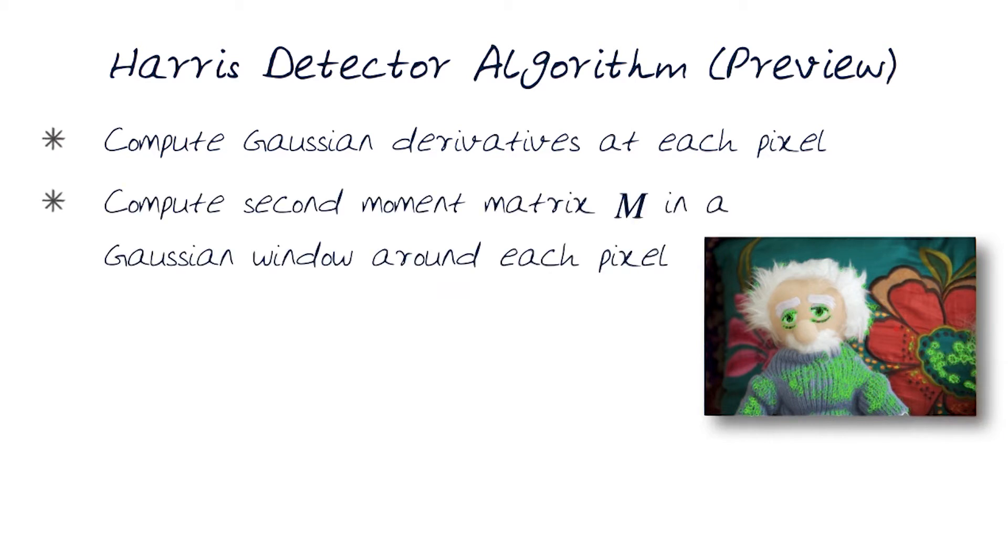Second thing we want to do is compute the second moment matrix M in a Gaussian window around each pixel. Find a pixel and going through this whole image, find a small region and compute the second moment matrix. Because now we have the derivatives, we know how to do this.